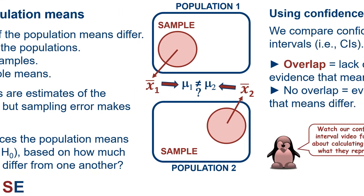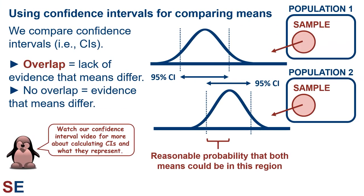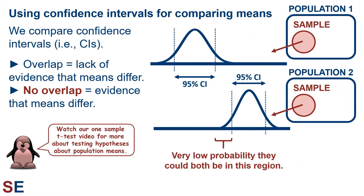One way to figure out if the population means are probably different would be by using confidence intervals for comparing the means. We could take our two samples and calculate the 95% confidence interval for each of them and look to see whether they overlap. We know that the true population means are probably in the middle part of these confidence intervals, so if they overlap, it could easily be the case that both populations have the same mean in the overlapping region. When this happens, this would represent a lack of evidence that the population means are different from each other.